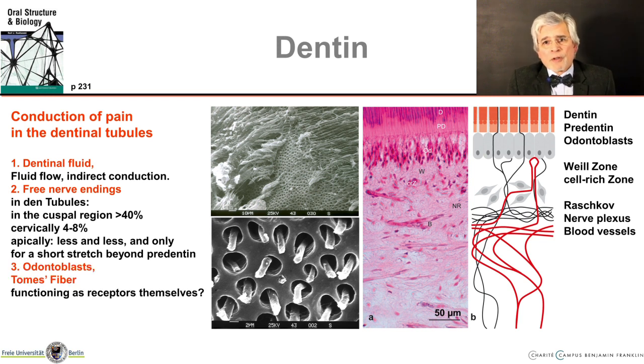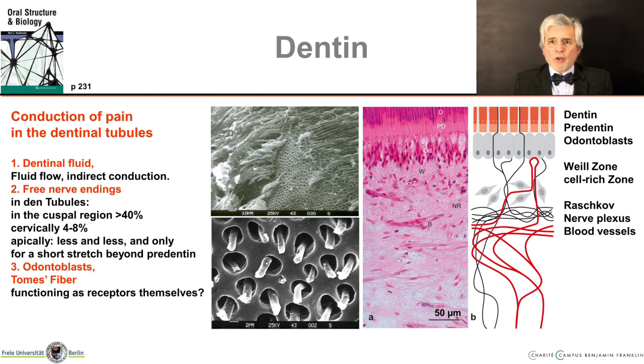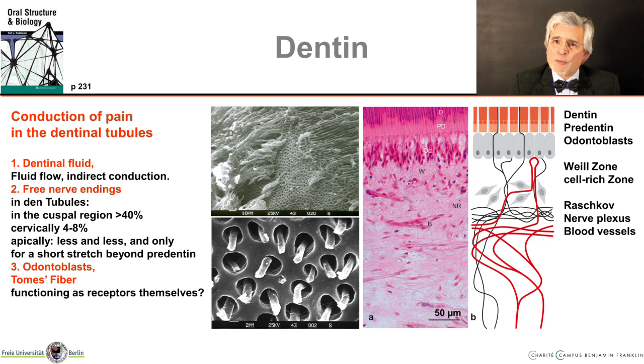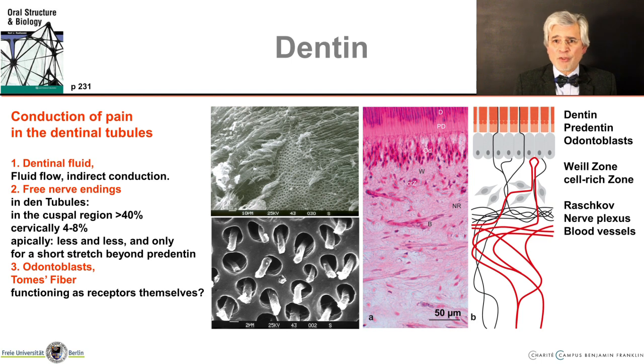Thirdly, there is the odontoblast itself as a pain receptor — the transduction theory. It is speculated that the odontoblast, especially its process, functions as a transmitter of pain perception and transmits it to downstream nerves. This assumption is supported by the observation that odontoblast processes and nerve fibers are connected by gap junctions, but there is no evidence that they actually communicate electrically with each other. So, the current status is that possibly all three mechanisms together — as described in these three theories — may contribute to the overall perception of pain in dentine.